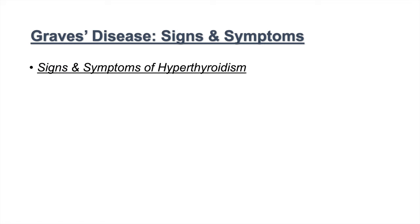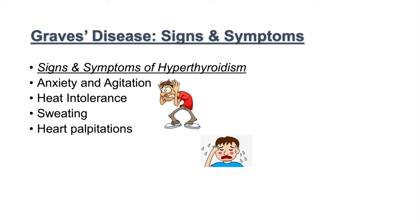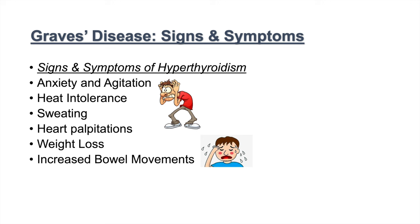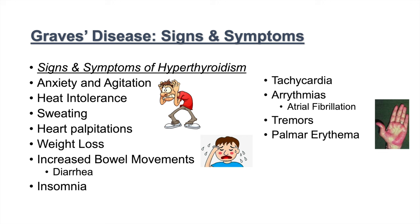The signs and symptoms of Graves' disease depend on the effects of high levels of T4 and T3, leading to hyperthyroidism. These include anxiety and agitation, heat intolerance, sweating, heart palpitations, weight loss, increased bowel movements and diarrhea, insomnia, tachycardia, which can lead to arrhythmias like atrial fibrillation, tremors, palmar erythema — a reddening of the palms — hyperreflexia, and proximal weakness.